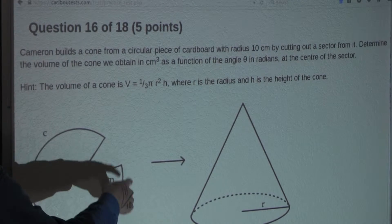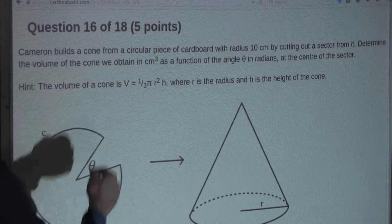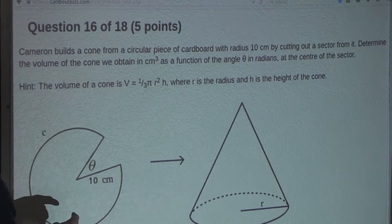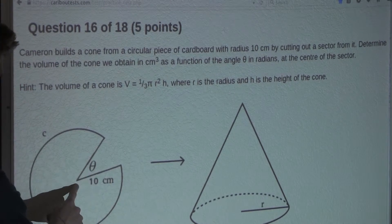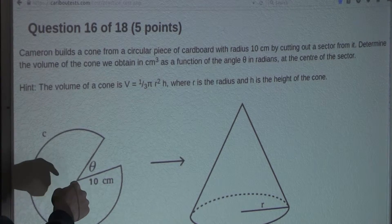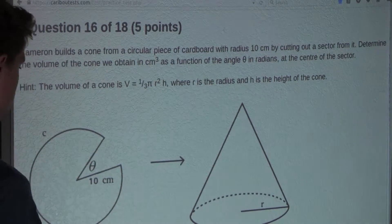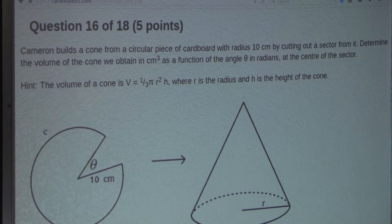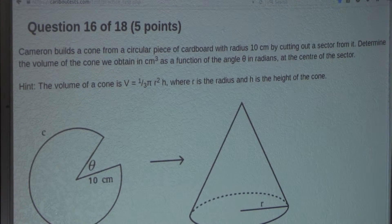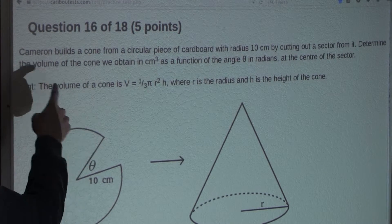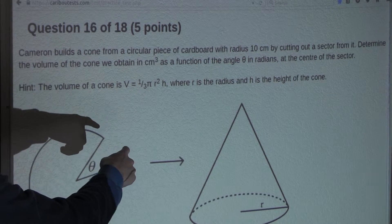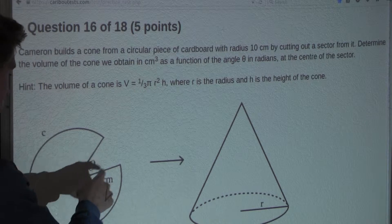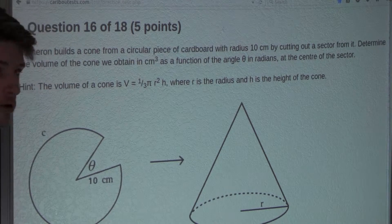Here is what the circular piece of cardboard looks like. It has radius 10 centimeters, as shown. And by cutting out a sector from it — here is the sector cut out from the circular piece of cardboard — we want to determine the volume of the cone. The circular piece of cardboard, after cutting out this sector, can be made into this cone.